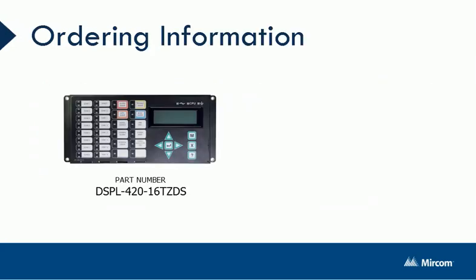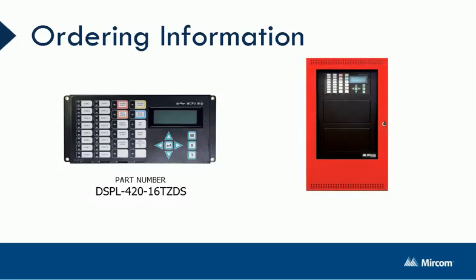The DSPL-420-16-TZDS can be purchased in two ways. It can either be purchased on its own, to take advantage of the additional 16 LED zones of enunciation, with the part number DSPL-420-16-TZDS. Or it can also be purchased as a kit, which consists of an FX-2003 chassis, an FX-2000 mainboard, a 6-amp power supply, and a dead front with a pre-installed DSPL-420-16-TZDS, under the part number FX-2003-6DS-16-LED.